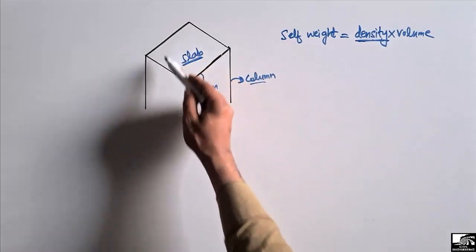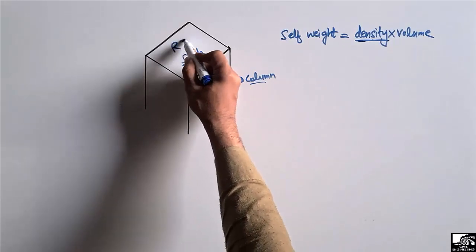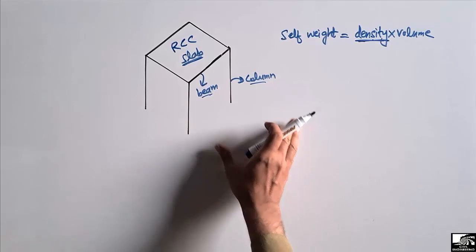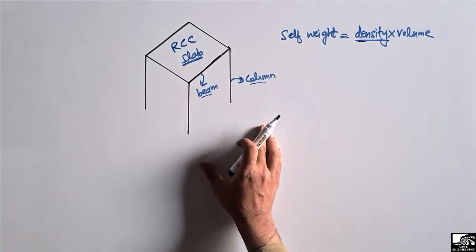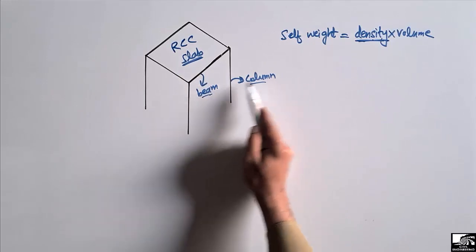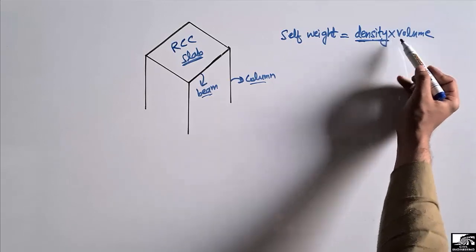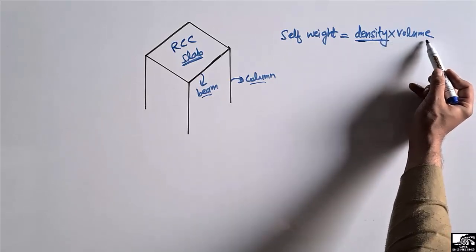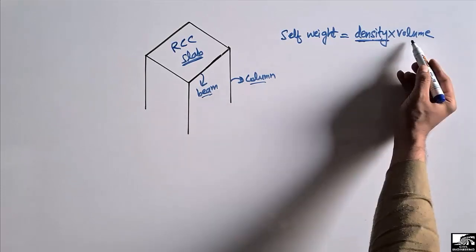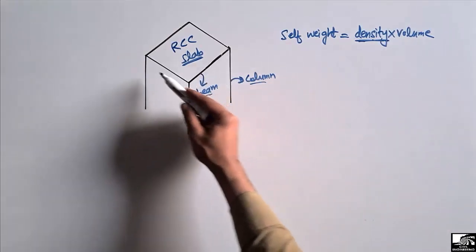In this lecture we are considering a frame structure made up of reinforced cement concrete (RCC) — so we have an RCC slab, RCC beam, and RCC column. The density is the material density, and the other quantity is the volume of the member. Volume is the multiplication of the length, width, and thickness of the member.